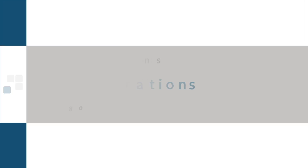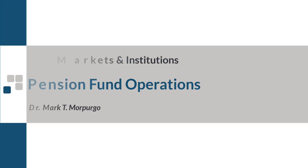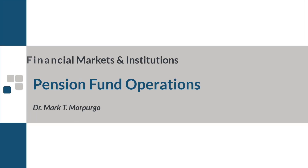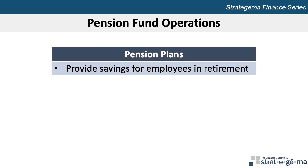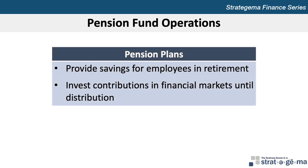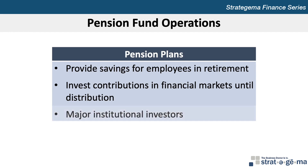This video provides an overview of the major concepts covered in Chapter 26, Pension Fund Operations. Pension plans provide savings for employees that can be used for retirement. Pension plans invest the money set aside by employers for their retirement in the financial markets until those funds need to be distributed, and for this reason, pension plans serve as major institutional investors.